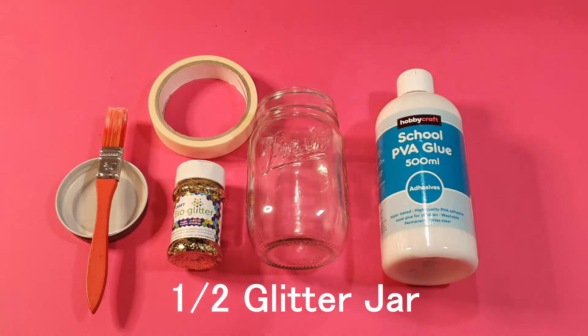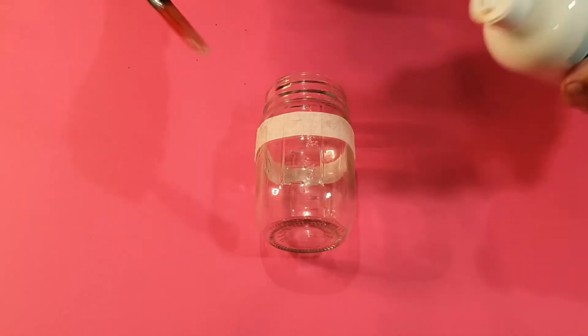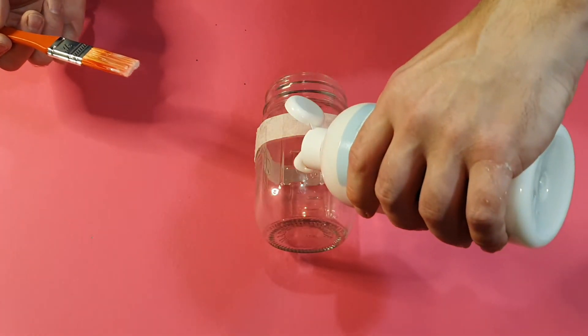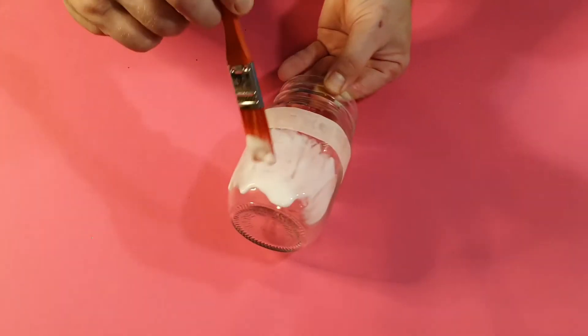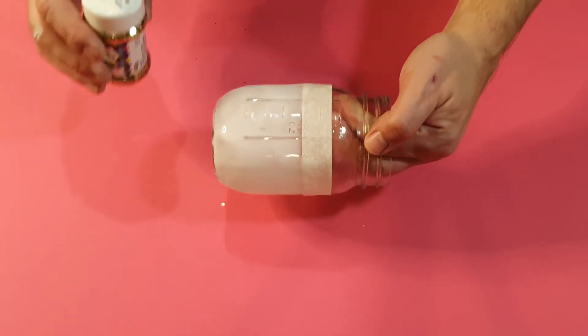This half glitter jar is gorgeous. So let's start by putting some masking tape on the bottom. The masking tape is up to the top of the line of where the glass is going to come. Cover it with glue, make sure you get a nice thick layer. Sprinkle on some sparkles. Take your time to get a really good thick covering here.